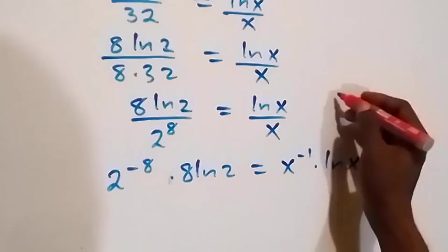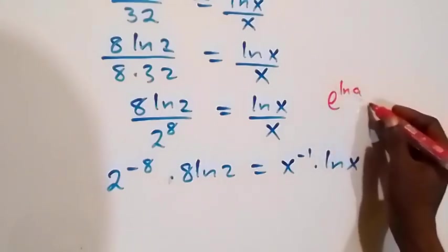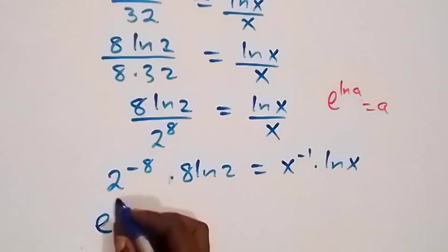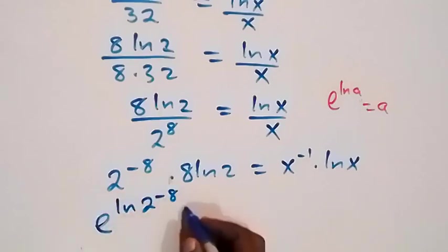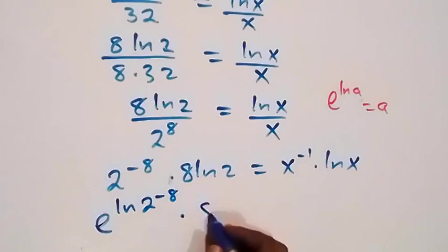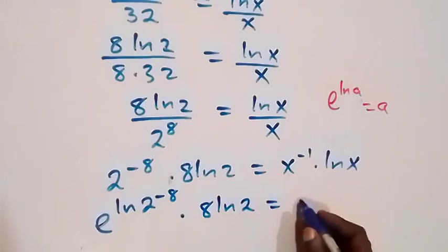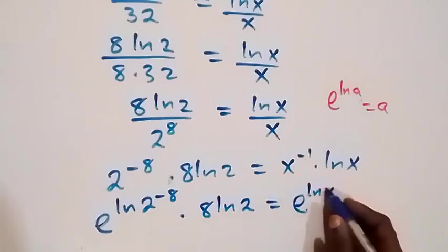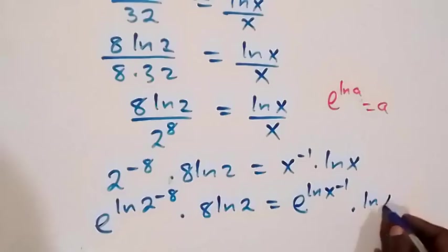From the identity e raised to power ln a is the same thing as a. So here we can write it as e raised to power ln 2 raised to power minus 8, times 8 ln 2, now equals to e raised to power ln x raised to power minus 1, then times ln x.